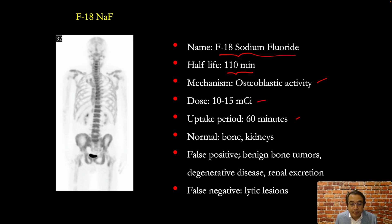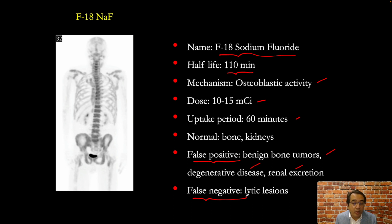False positives occur when there is focal increased uptake but no metastatic disease — this can happen with benign bone tumors, degenerative bone disease, and sometimes renal excretion such as focal activity in the distal ureter mimicking a bone lesion. False negatives occur when there is metastatic disease but no focal increased uptake; that's when there are lytic lesions. Malignancies that lead to lytic lesions include renal cell carcinoma, thyroid carcinoma, and cancers with mixed lytic and blastic metastases such as lung and breast cancer, and also multiple myeloma.